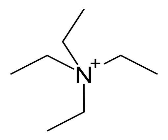The chloride salt is prepared by the reaction of triethylamine and an ethyl halide: Et3N + EtX → Et4N⁺ X⁻. This method works well for the preparation of tetraethylammonium iodide, where X equals I. Most tetraethylammonium salts are prepared by salt metathesis reactions.